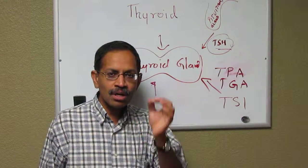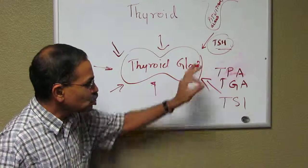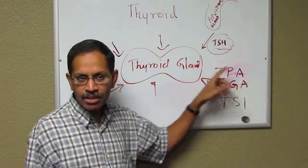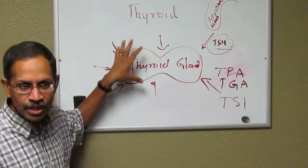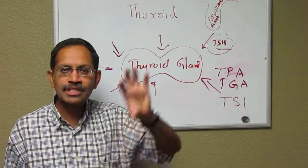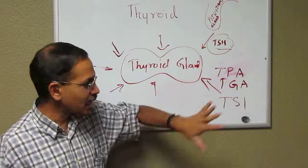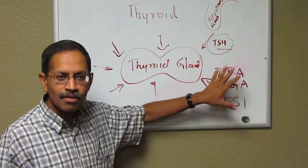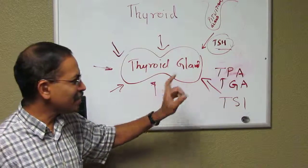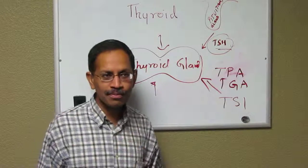One important point to remember: with autoimmune thyroid disease, you cannot make the antibodies go away. All you can do is support the thyroid gland with some kind of medication or treatment, because as it stands in July 2015, we do not have anything to make the antibodies go away.